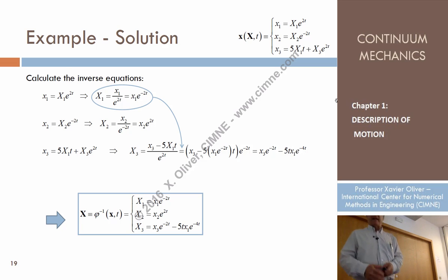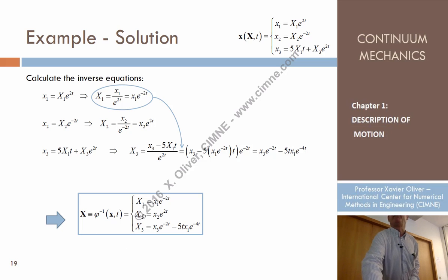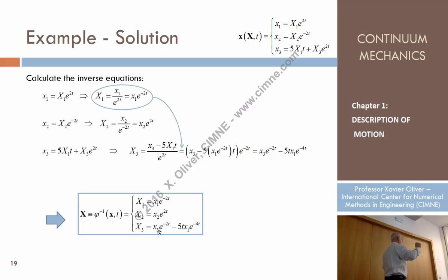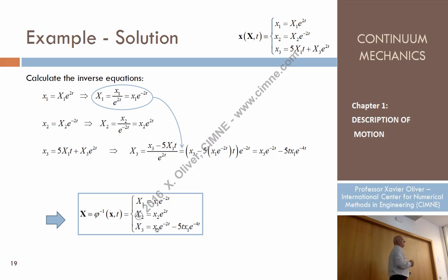These are the equations that represent the inverse equations of motion — the inverse of the direct equations of motion. Using these inverse equations, if I replace a given spatial position x1, x2, x3 — for instance, what is the particle that at time t equals 1 occupies the position (1, 2, 3)? I replace T=1, x1=1, x2=2, x3=3, and I obtain three numbers. These three numbers are the coordinates of that particle at the reference configuration.